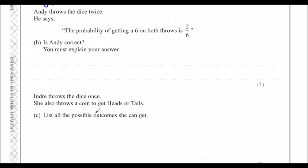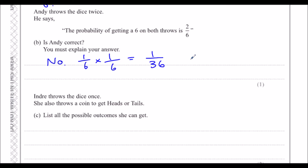Andy throws the dice twice and says the probability of getting a 6 on both throws is 2/6. Is Andy correct? No. The probability of getting a 6 on both throws is 1/6 times 1/6, which is 1 in 36.